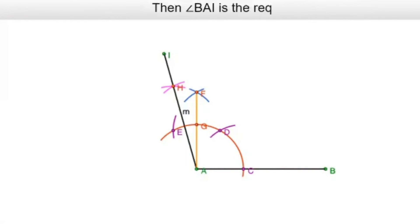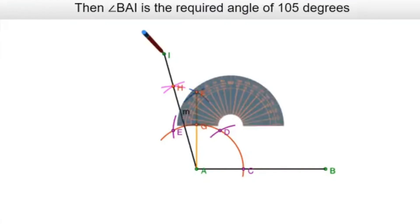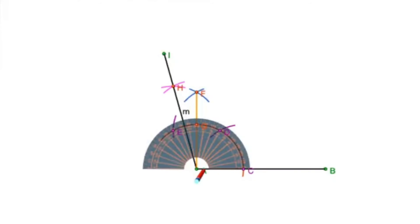Then angle BAI is the required angle of 105 degrees. I can measure it using a protractor. So it's coming out to be exactly 105 degrees. Therefore our construction is correct.